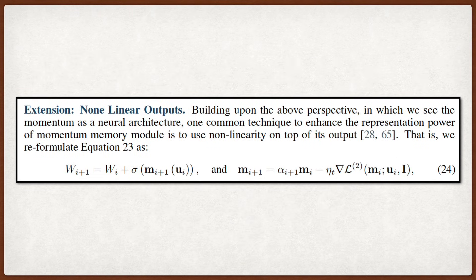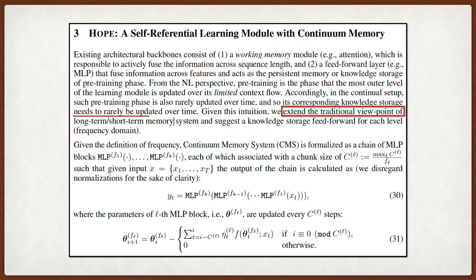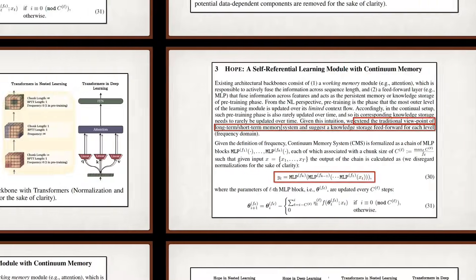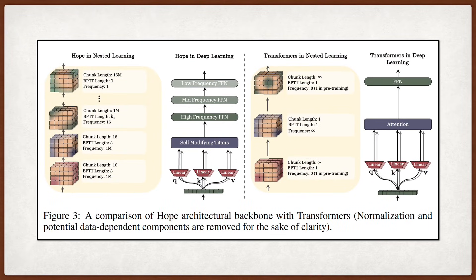They also show how introducing non-linearity on the memory output leads to variance equivalent to optimizers like MOON. Moving to architecture, NL introduces the Continuum Memory System, or CMS, which generalizes the traditional dichotomy of short-term and long-term memory. CMS is formalized as a chain of MLP blocks, where each block is associated with a specific, different update frequency, essentially compressing its context into its parameters at varying timescales.